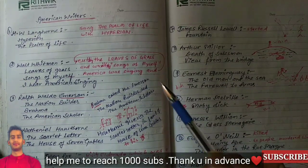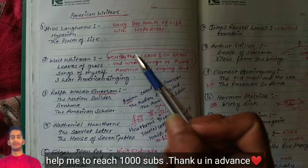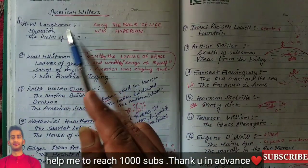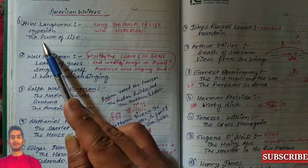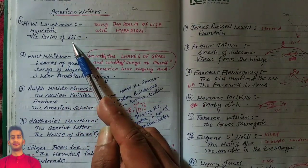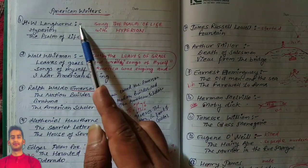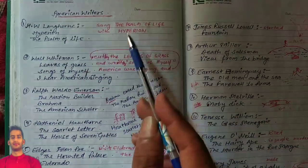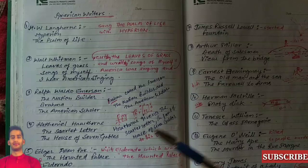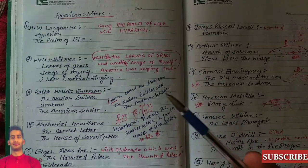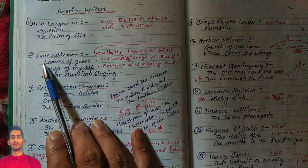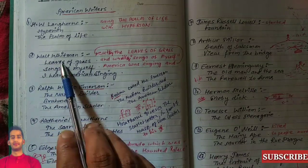The first writer is H.W. Longfellow, and his works are Hyperion and The Song of Life. I have a shortcut for this — I will be telling you all the shortcuts in the next video, otherwise this video will be too long to upload. Also, I am facing a network problem.